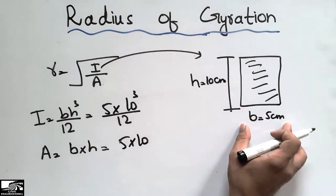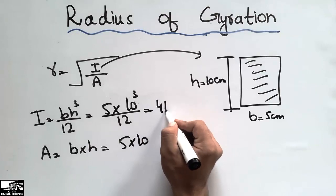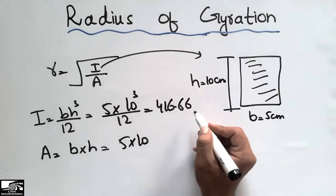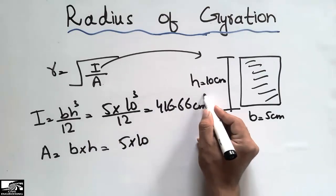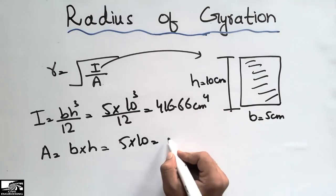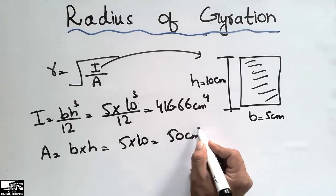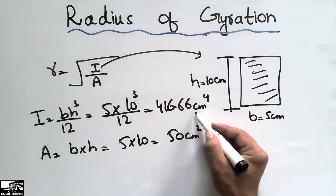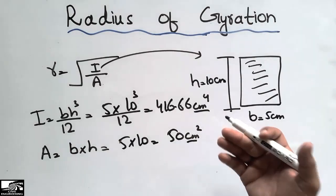This comes out to be 416.66 centimeters to the power 4, and 50 centimeters squared. Remember that this should be in the same unit - centimeter⁴ or meter⁴ or inch⁴, but the unit should be the same.